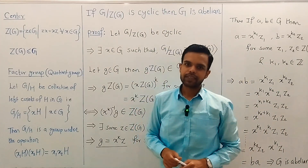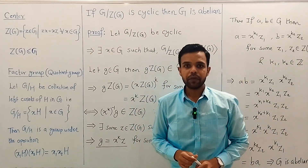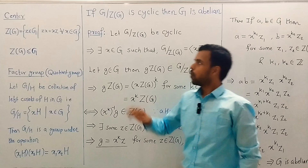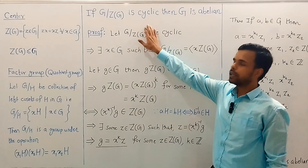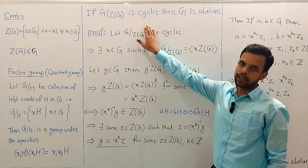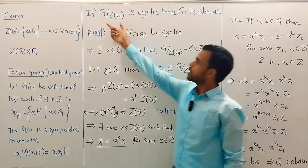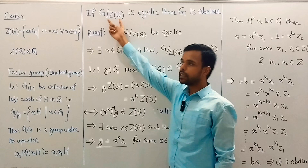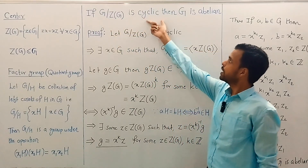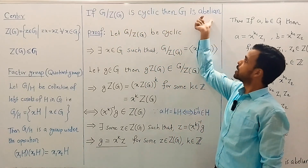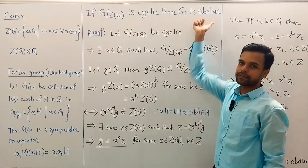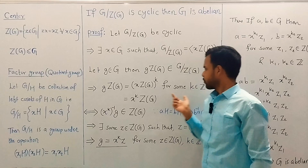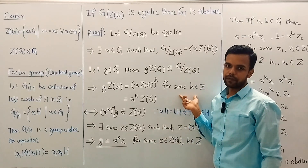Hello everyone, I am Akash. In today's video we will see a nice application of a beautiful result in group theory. This result states that if the quotient group G by Z(G) is cyclic then G is abelian. Before going to the application, let's quickly see its proof.